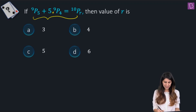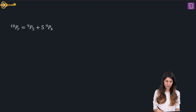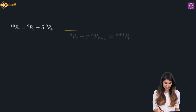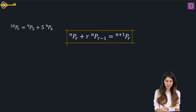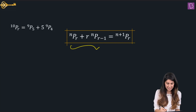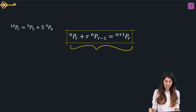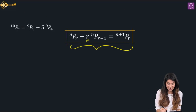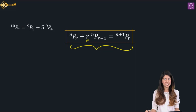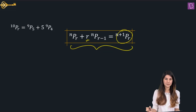Let me recall one very important formula for this particular scenario: NPR plus R times NPR minus 1 equals N+1 PR.